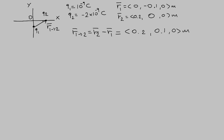The next step in calculating the electric force is to find the magnitude of this relative position vector. To do that, we need to take the square root of the x-component squared plus the y-component squared plus the z-component squared. In this case, the x-component is 0.2, the y-component is 0.1, and the z-component is 0. If we do the calculations, we will find the magnitude to be 0.22 meters.